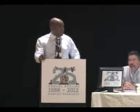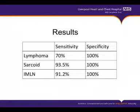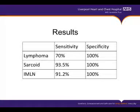Summarizing our sensitivities and specificities: for lymphoma in this group of patients, the sensitivity was 70% and the specificity 100%. To diagnose sarcoid, 93.5% sensitivity and 100% specificity. For diagnosing isolated mediastinal lymphadenopathy as a whole, a sensitivity of 91.2% and a specificity of 100%.